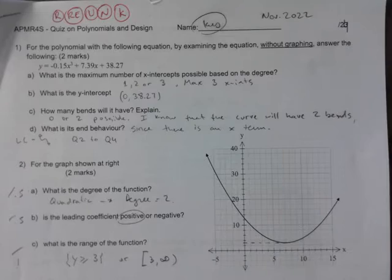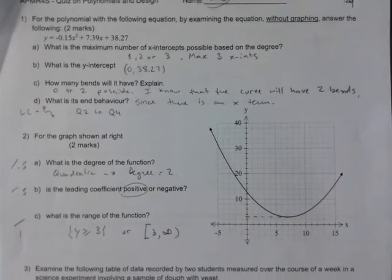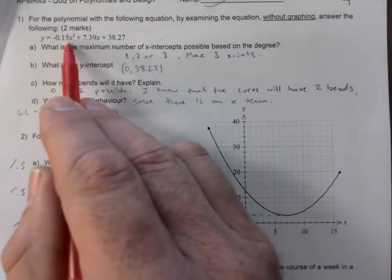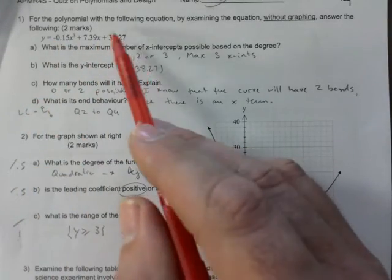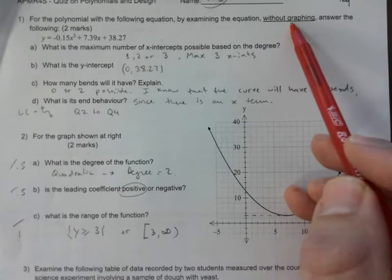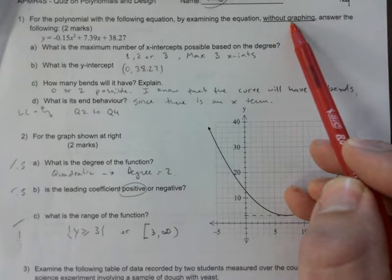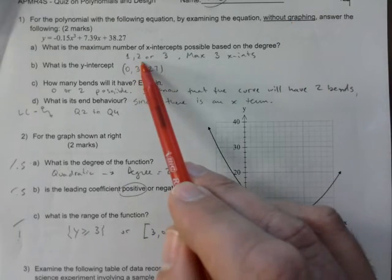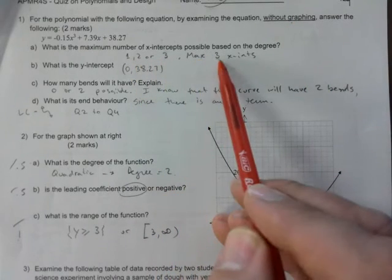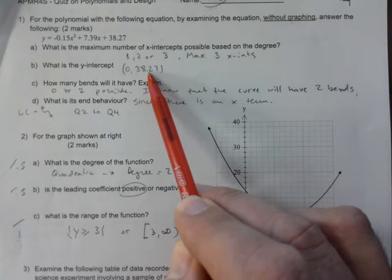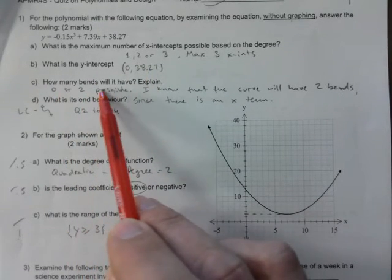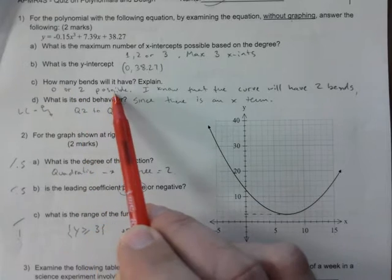Based on this polynomial, it's a cubic. Leading coefficient is negative, we know a bunch of stuff. This is my y-intercept. The key here was would you be able to tell me this without graphing. So one, two, or three are possible, but maximum is three. Y-intercept is like this. How many bends will it have? Zero or two are possible.